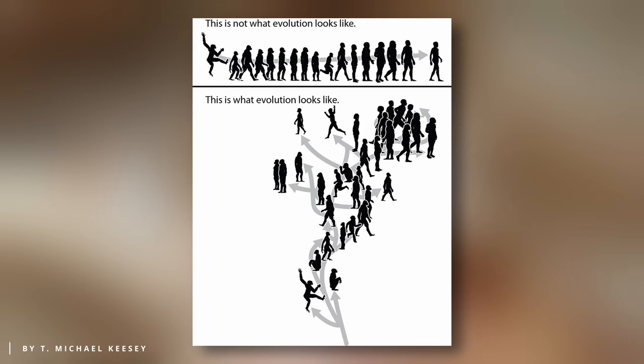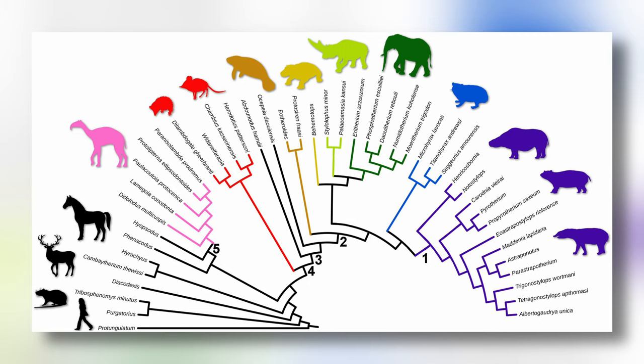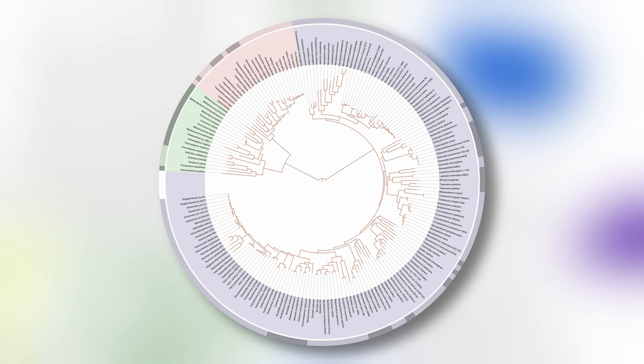The notion of a missing link implies a linear progression, where one species evolves into another and so on. That's the problem, as not every species fits into a direct lineage of ancestors and descendants. Rather than a chain, evolution follows a tree-like branching pattern, allowing for the possibility of multiple descendants of an ancestor to exist at the same time, or even alongside the ancestor itself.